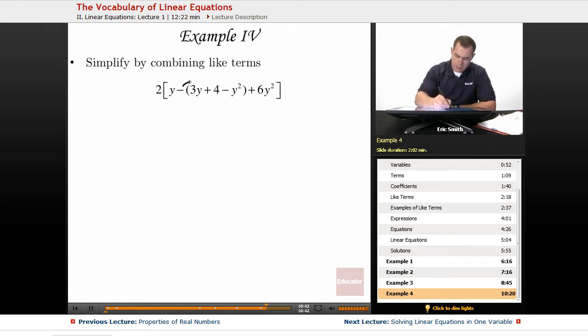So I'm going to take this negative sign and distribute it inside my parentheses here. Now that will give me a 2y minus a 3y minus a 4 plus a y squared plus a 6y squared.